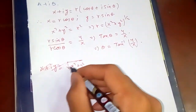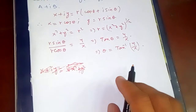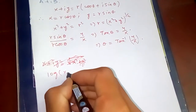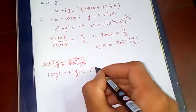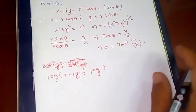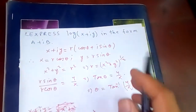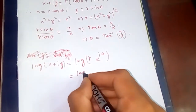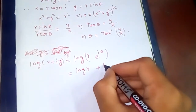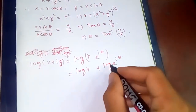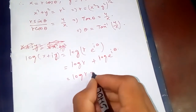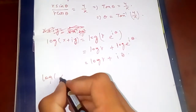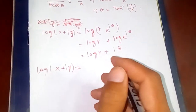Now let's take log of both sides. Log(x + iy) equals log of r times (cosθ + i sinθ). From Euler's formula, cosθ + i sinθ = e^(iθ), so using log properties this becomes log r + log(e^(iθ)), which simplifies to log r + iθ. Note that this log is the natural logarithm.